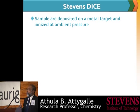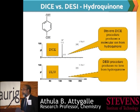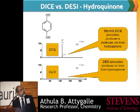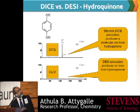Basically, this system — the modifications we have done — we can put a sample directly in something like a tablet you buy over-the-counter or any commercial tablet. Here is a comparison of our data. This technique, which we call DICE — it stands for Desorption Ionization by Chemical charge Exchange — this is the Stevens technique. And you can see, for this molecule hydroquinone, we see a very good signal for the molecular species.